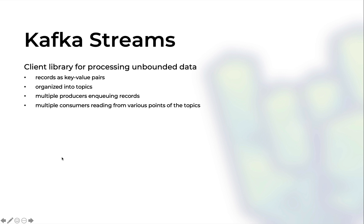Let me start with Kafka Streams. Kafka Streams is a client library for processing unbounded data. Client library means that the application we write as programmers uses the services provided by another infrastructure — in this case a Kafka cluster. We interact with a cluster to process a potentially endless stream of data, and this data is represented as key-value records, which makes them very easy to identify. They are organized into what Kafka calls topics, which are durable event logs — essentially persistent queues of data written to disk and replicated. In this architecture we have producing applications pushing records into these topics, and on the other hand we have multiple consumer applications which read the data in various ways at various points in time.